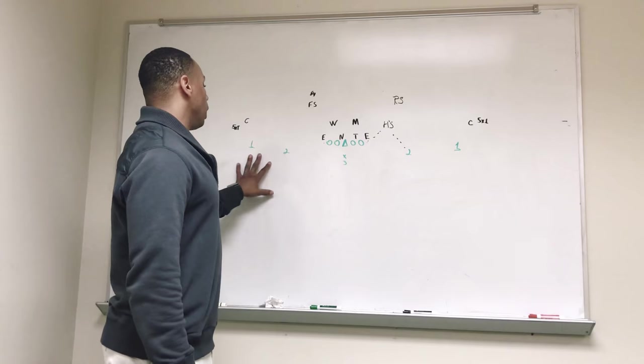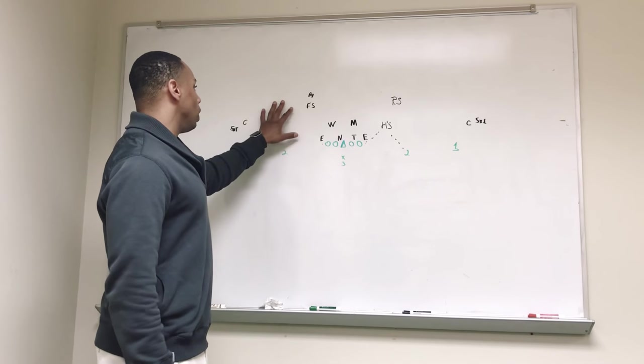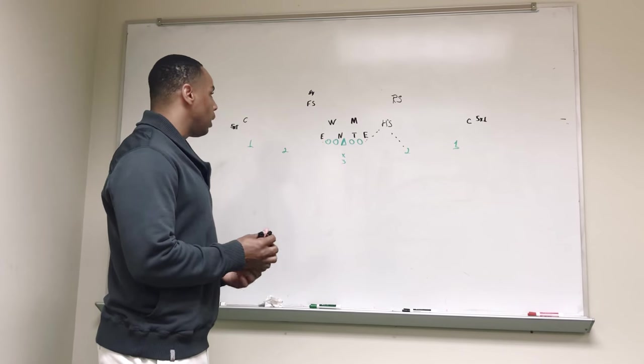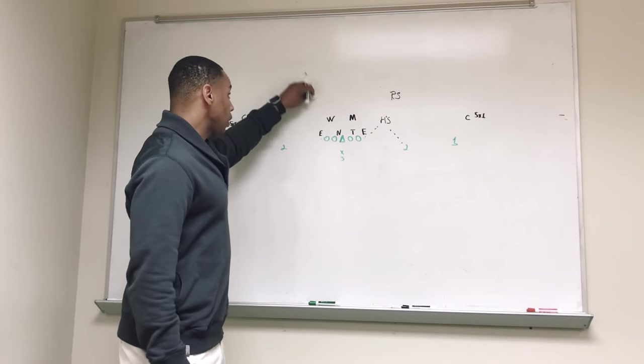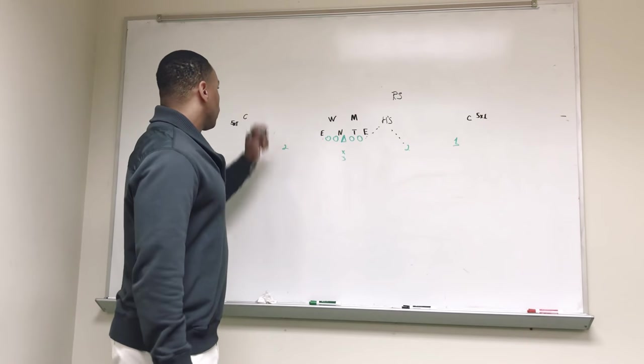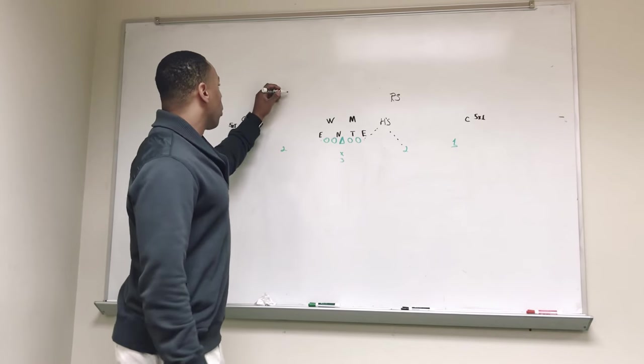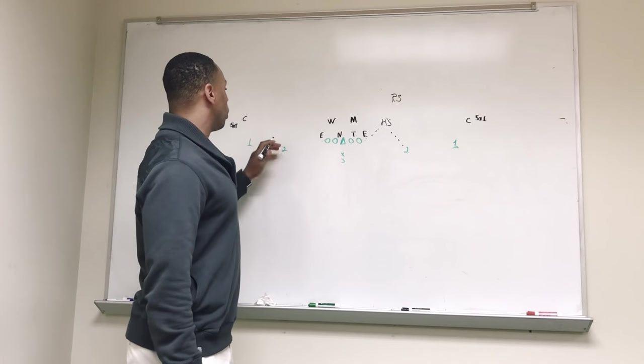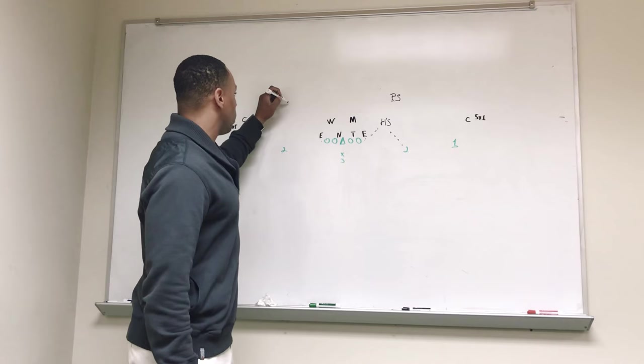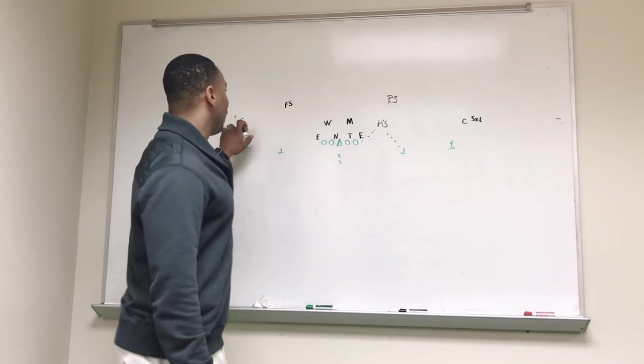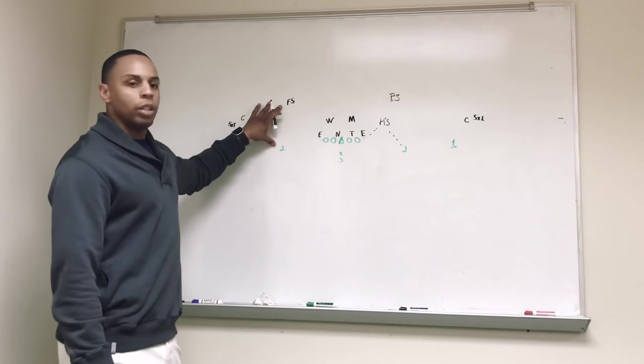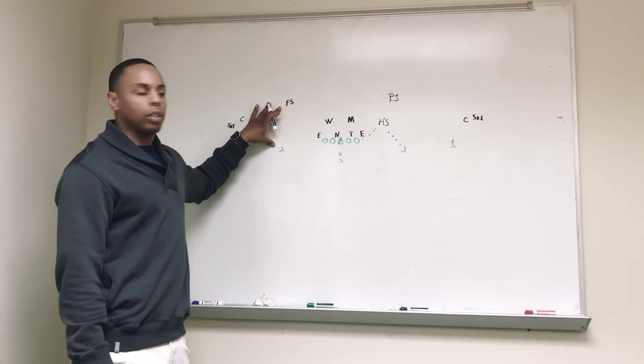So now we have to make sure that we even our numbers out here, and the way we do that is with our backside safety. We will adjust him to be 4 to 8 yards deep depending on who we're playing and what this guy brings to the table. And our corner, the technique that we play here with these two is we play palms with these two.